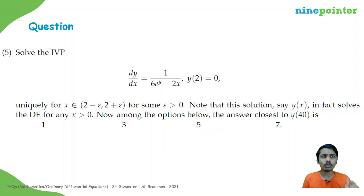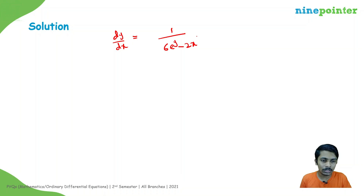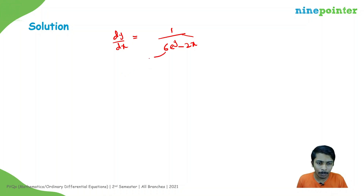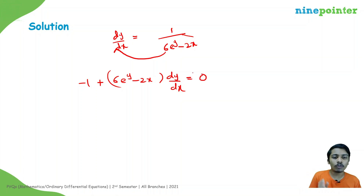To find y(40) we must solve the differential equation. Let me rewrite it as dy/dx = (1/6)e^(y−2x). Converting to standard form by multiplying: 6e^(y−2x) · dy/dx − 1 = 0, or equivalently M + N·y′ = 0 where M = −1 and N = 6e^(y−2x).